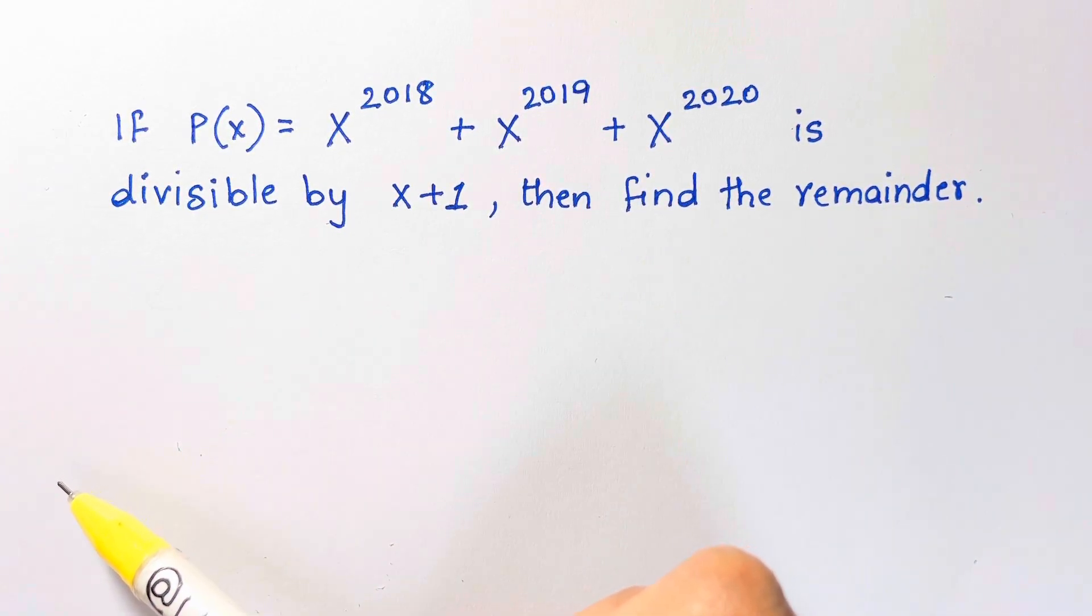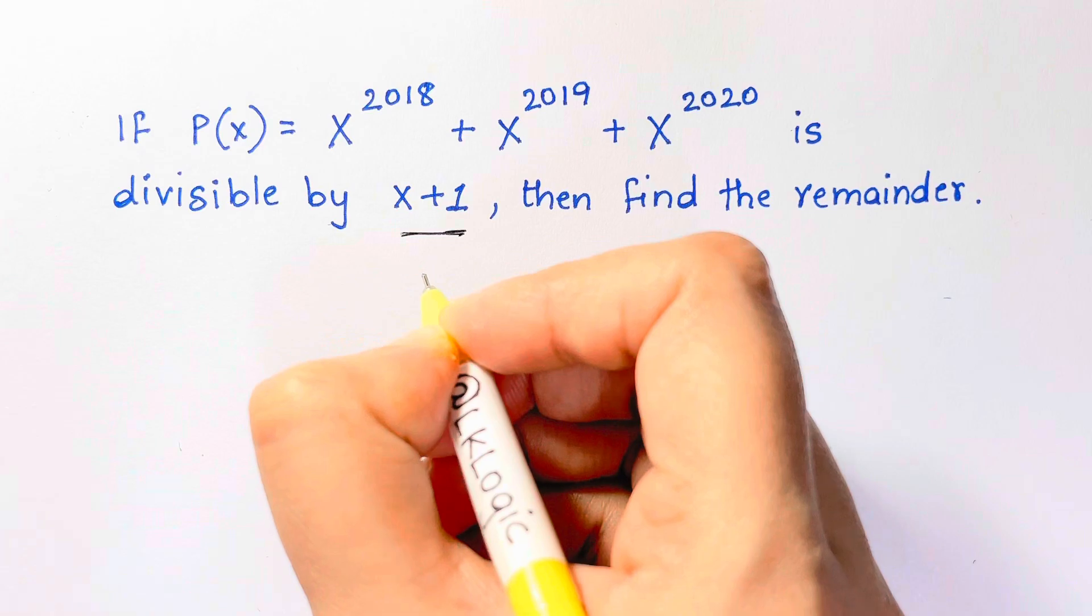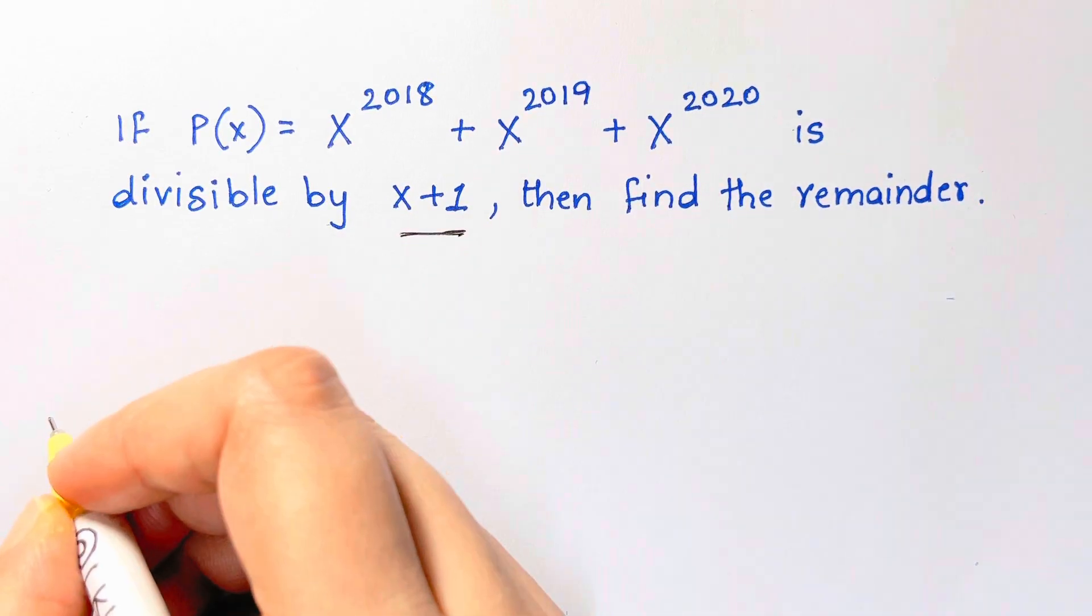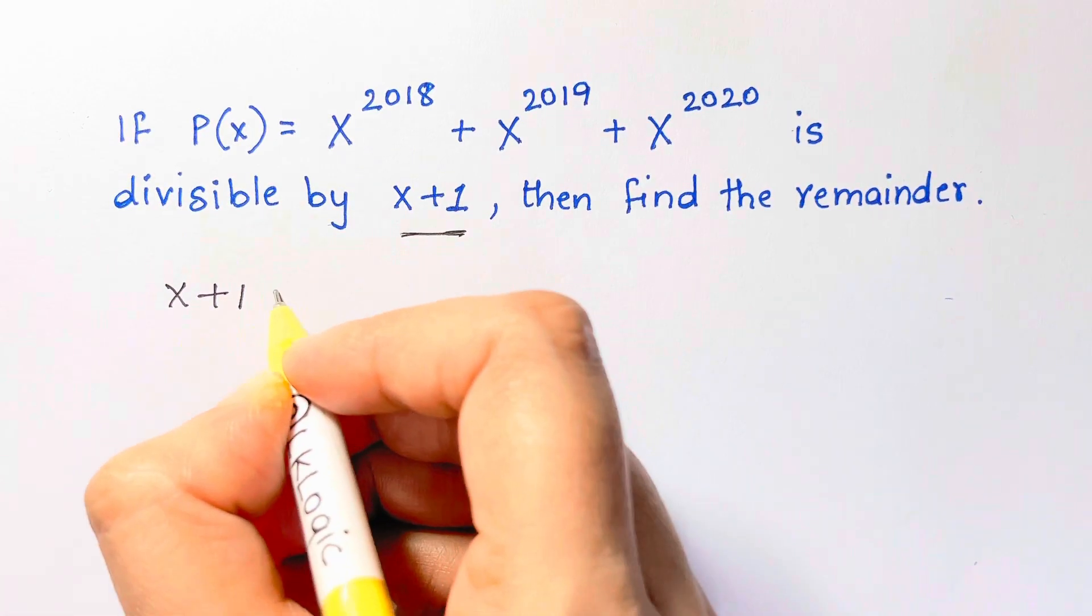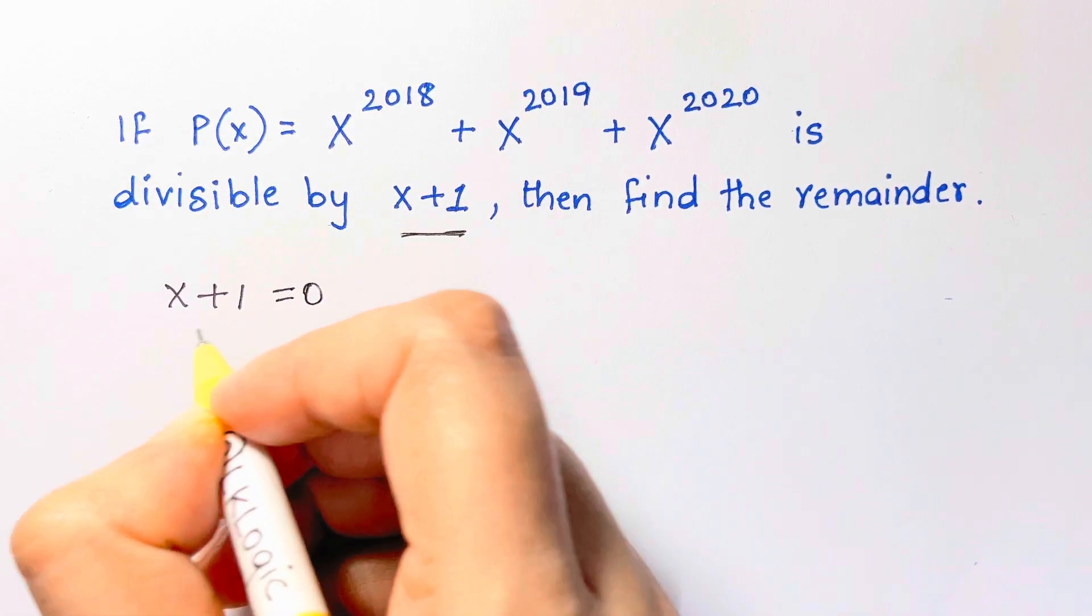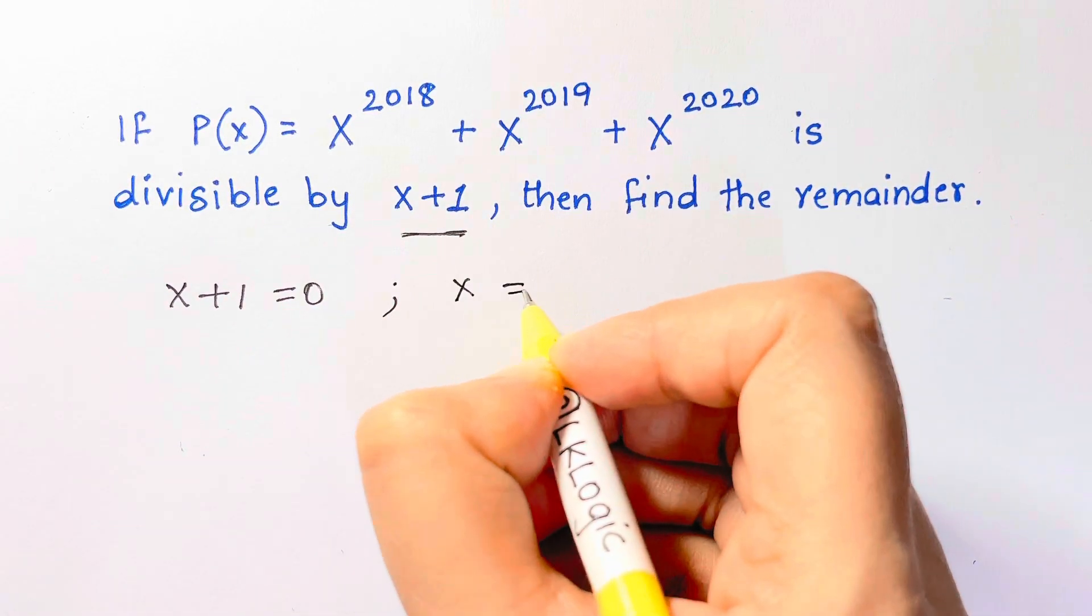It has a very simple solution. What do we do here is when it is divisible by x plus 1, you have been given a factor, it's easy for us to solve. So x plus 1, whenever we have a factor, we just equate it to 0 and find the value of that variable. So here we have x is equal to, send it to the other side, we have negative 1.